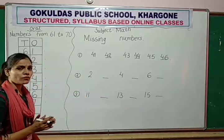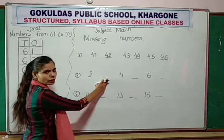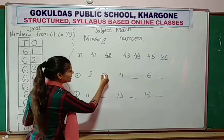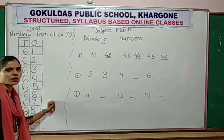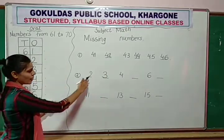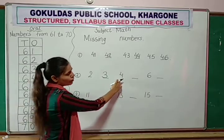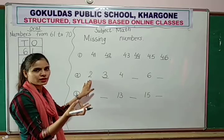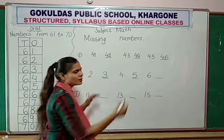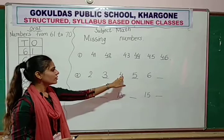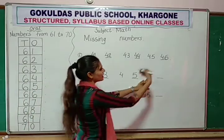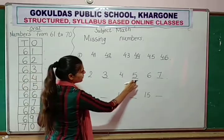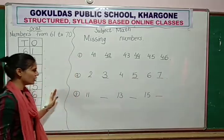After number 2, which number will come? Count on your finger: 1, 2, 3. So after number 2, number 3 will come. And how to write number 3? You know how to write number 3. So: 2, 3, 4. Now after number 4, which number will come? 6, 7. Finish.